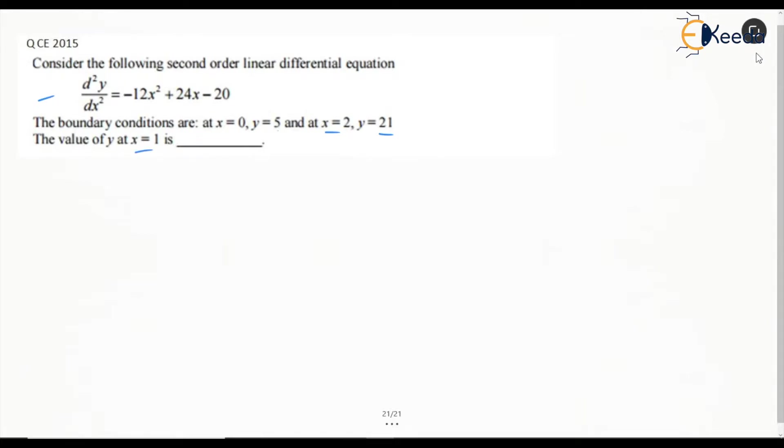Let's see: d²y/dx² = -12x² + 24x - 20. On integrating, we will get...